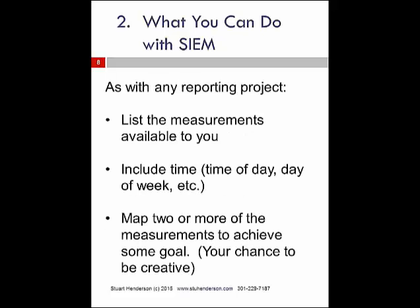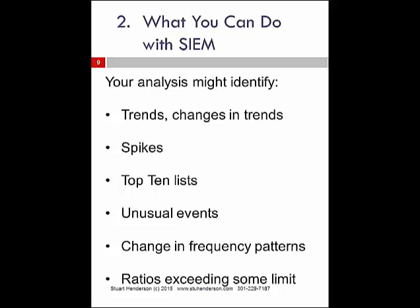Your starting point is going to be to list all the measurements, all the data elements that are available to you. Your analysis might identify, for example, trends, or even more interesting, changes in trends. In contrast to gradual changes, your analysis might identify spikes. Your analysis might identify top ten lists, which leads us to the next thing you might identify, which is unusual events.